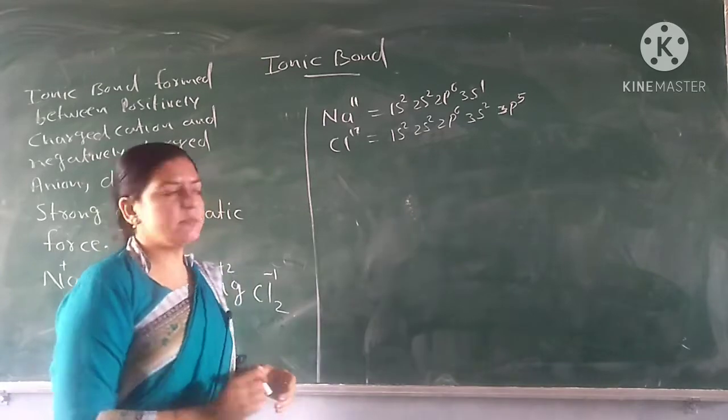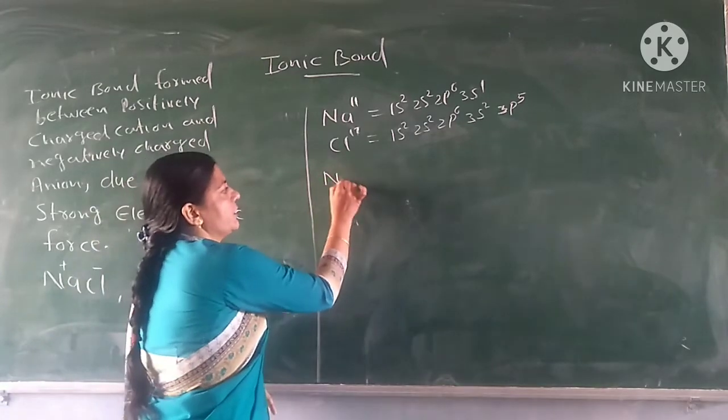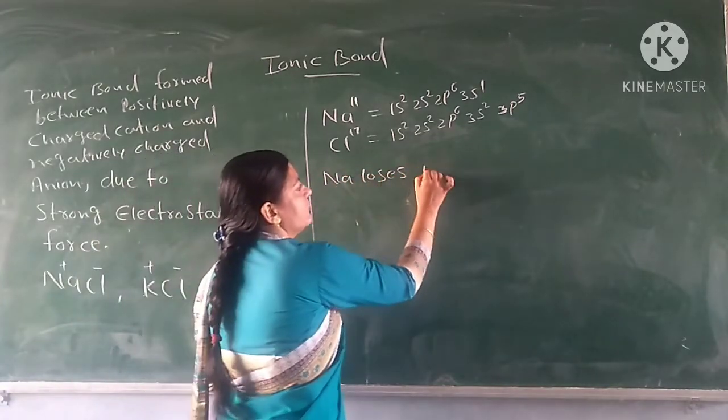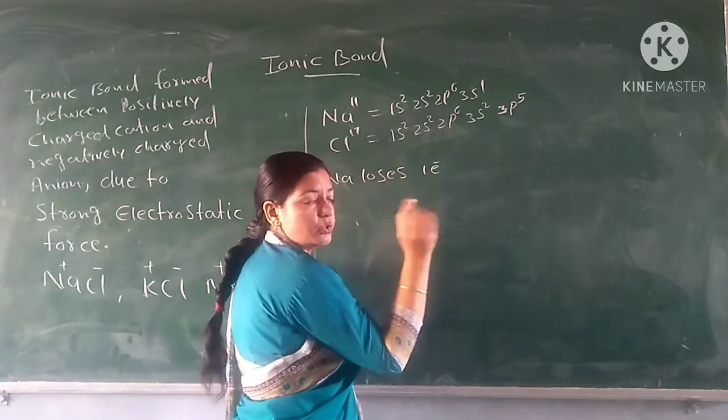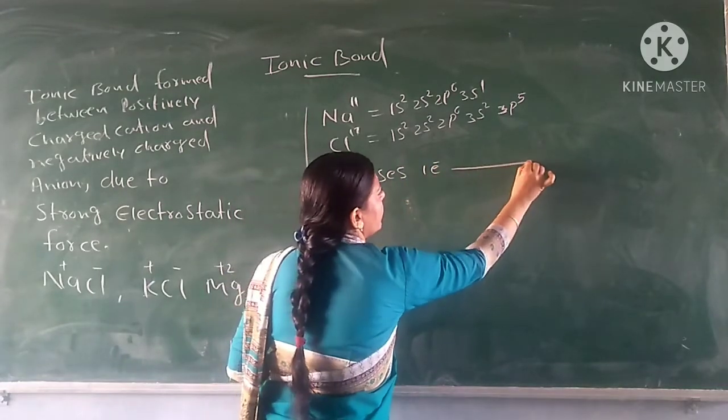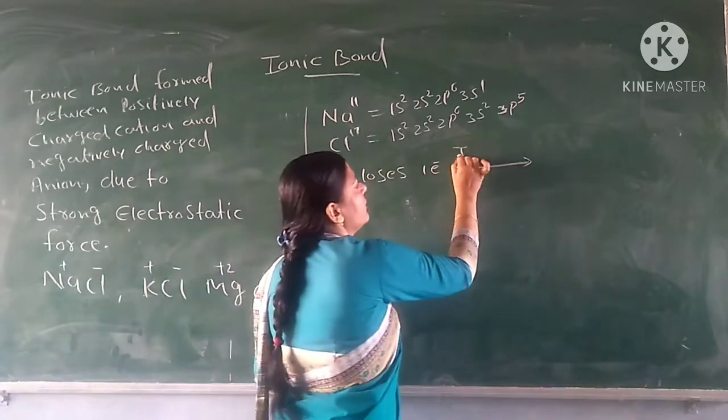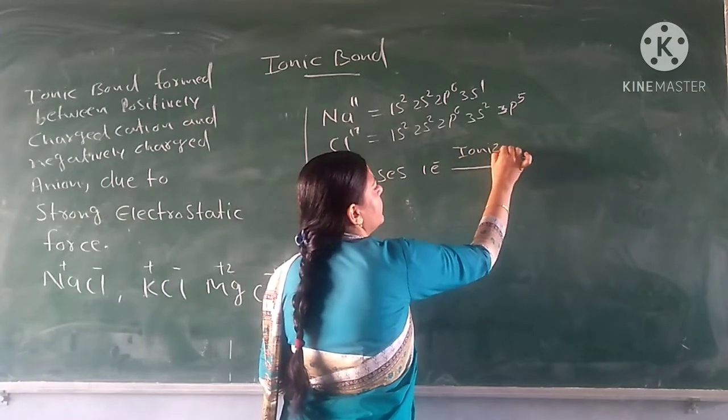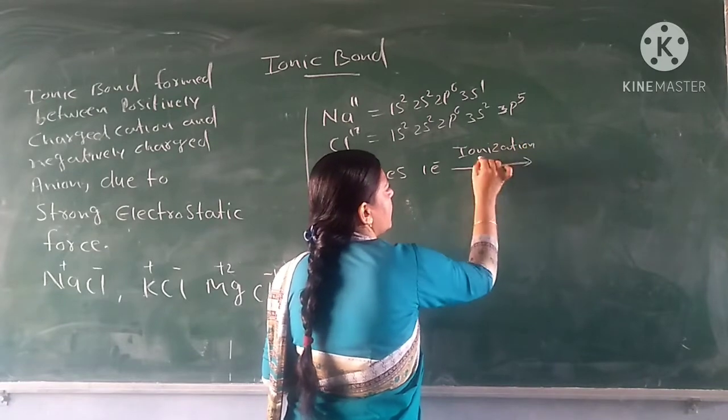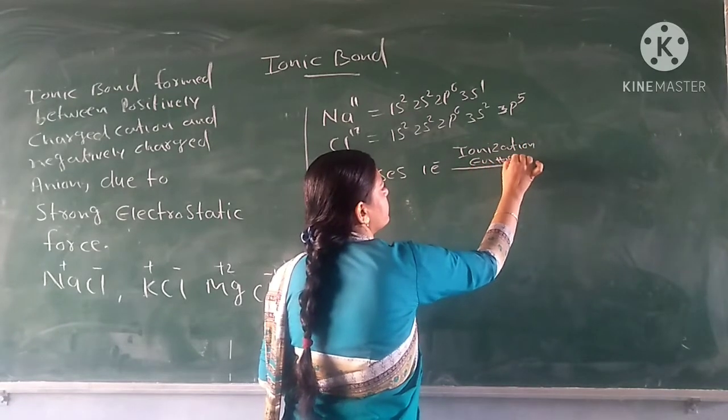First, sodium loses one electron. When an electron is lost, which energy is involved? Ionization enthalpy. The energy required for sodium to lose an electron is ionization enthalpy.